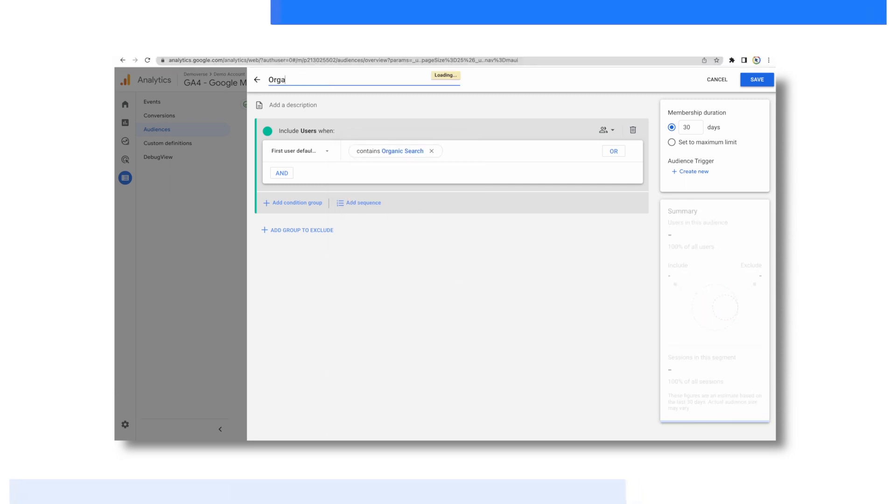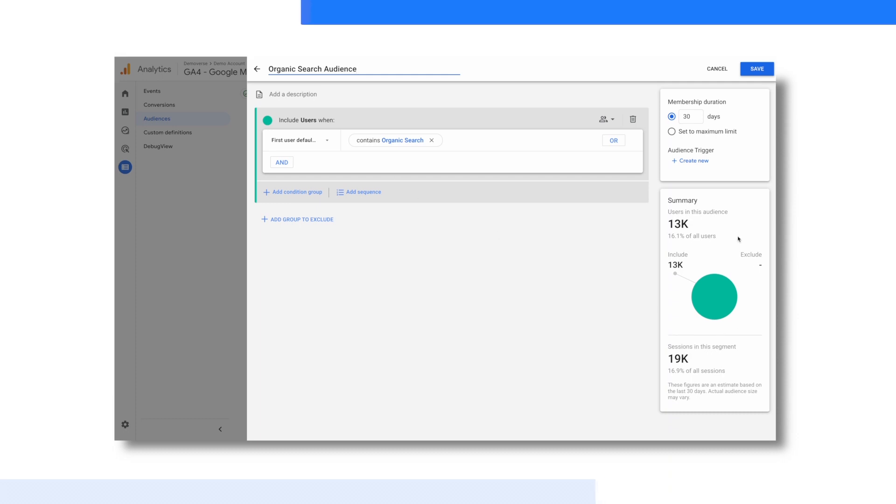We'll give this new audience a name. And on the bottom right of the screen, we can even see an estimated audience size. Once you hit save, the audience will be automatically shared with linked activations accounts like Google Ads, Search Ads 360, or Display and Video 360. New audiences generally show within 24 to 48 hours.